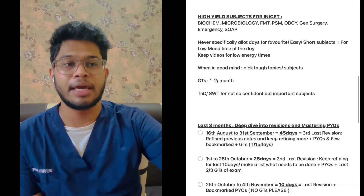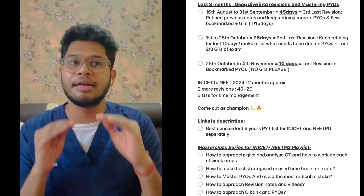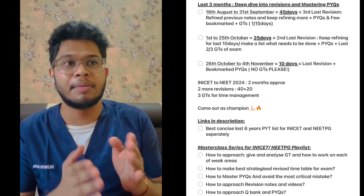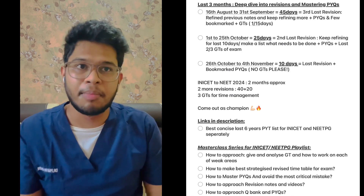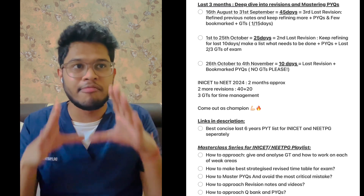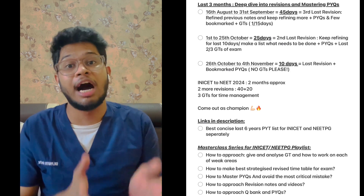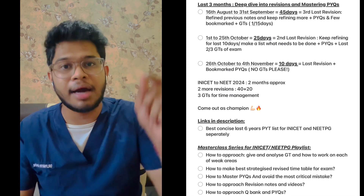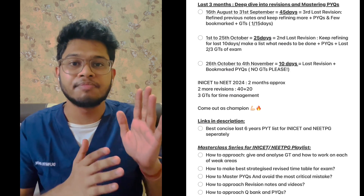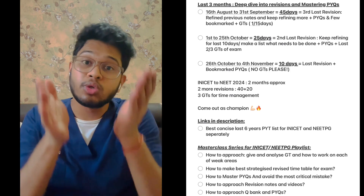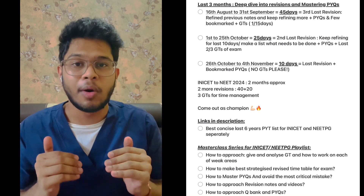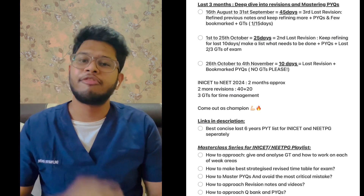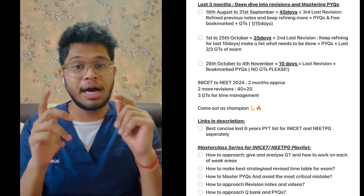Now let's talk about the last three months. In the last three months you have to take a complete deep dive into revisions of whatever you have done and master previous year questions. From 16th August to 31st September — that is 45 days — the first revision: go through that refined final notes and keep refining more, because you have to cover the same notes in half the time in the second-last revision. Solve previous year questions once and bookmark other questions, finish them off right now, and give a grand test roughly once every 15 days.